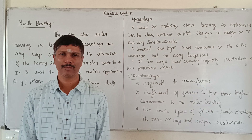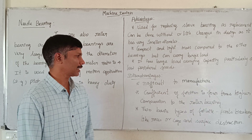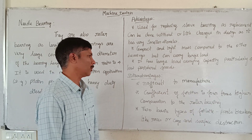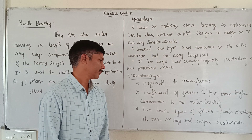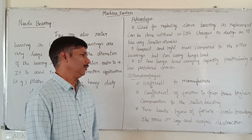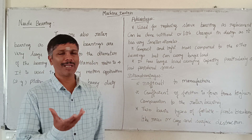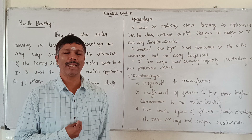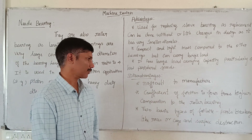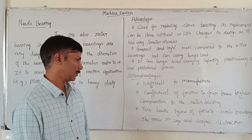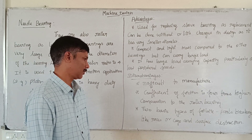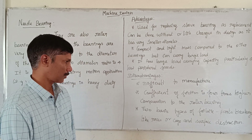Disadvantages of needle bearing: difficult to manufacture. Coefficient of friction is 4 times higher in comparison to roller bearing. Two basic types of failure are: part breakage like races or cage, and surface defects.